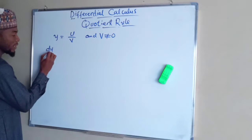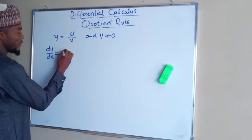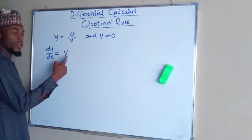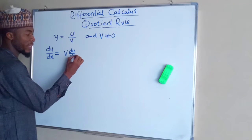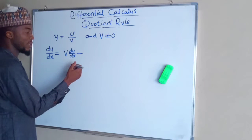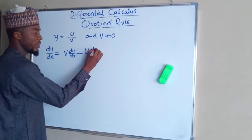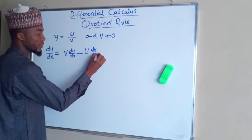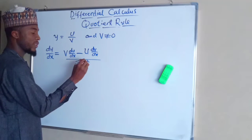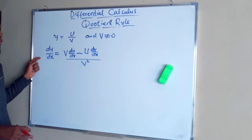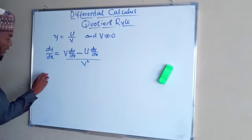Therefore, dy/dx is equal to: keep v constant and differentiate u with respect to x, minus keep u constant and differentiate v with respect to x, all divided by v squared. This is how the quotient rule is defined in differential calculus.